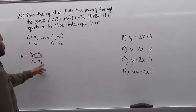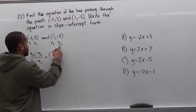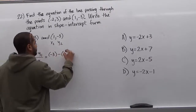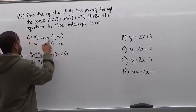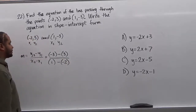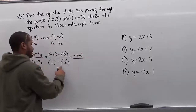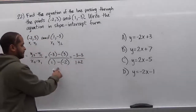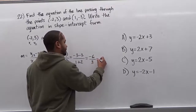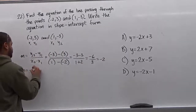We're just going to pull the values we have labeled. So x2 and y2 come from the second point, x1 and y1 from the first. Using parentheses for every substitution: y2 is negative 3, take away y1 which is positive 3, over x2 which is 1, minus x1 which is negative 2. Dropping the parentheses, we have negative 3 minus 3 over 1 plus 2 — the negative negative changes to a positive. That gives us negative 6 over positive 3, which equals negative 2. So our slope m equals negative 2.